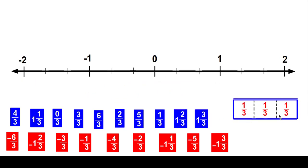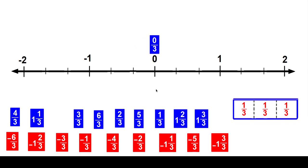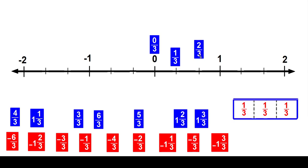So again, this would be zero thirds. Zero is zero thirds. And this would be one third. And next would be two thirds.